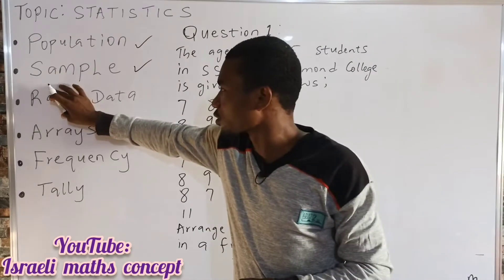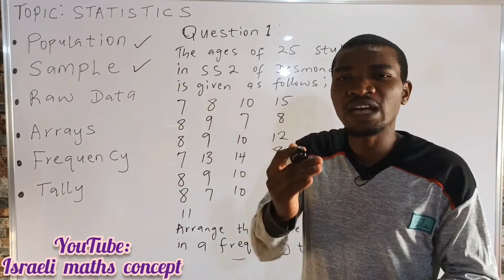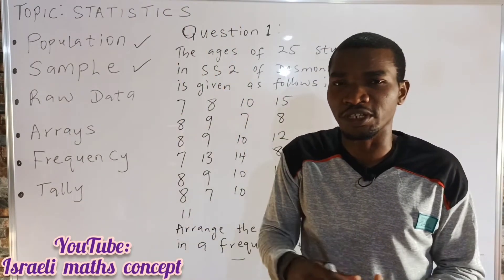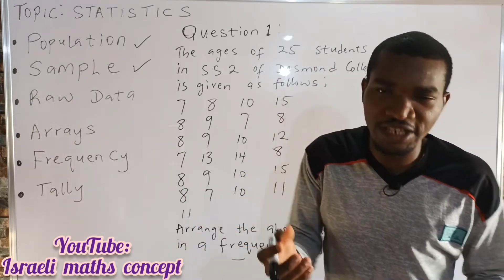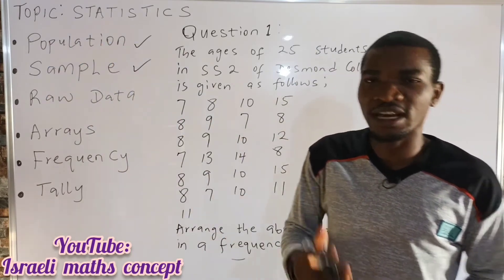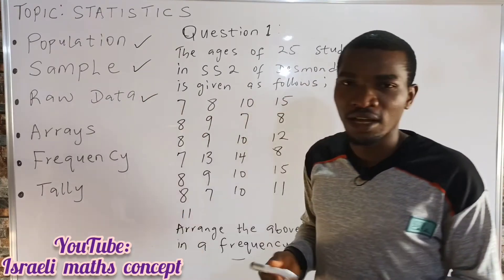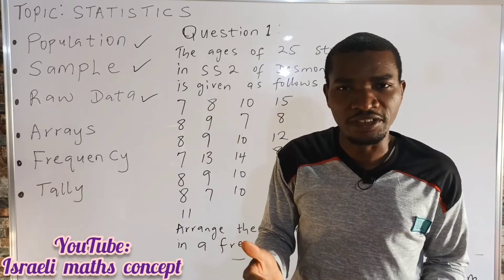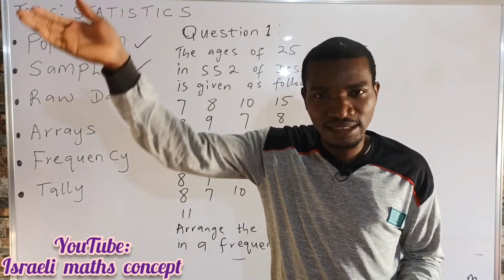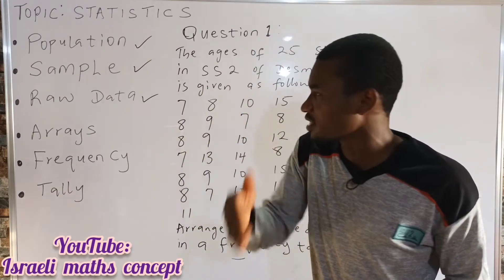Let's get into raw data. What is raw data? Raw data simply means those collected data which have not been organized numerically — that is, not arranged in ascending or descending order. We consider such data as raw data. Then let's get into arrays. What is array? Array simply means the arrangement of a given set of data in either ascending or descending order. Whenever you arrange a given set of data in ascending or descending order, that data is an array.